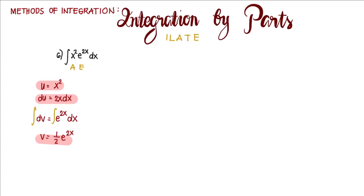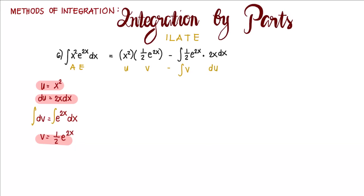We now use the formula to rewrite our given. Using u v minus the integral of v du, that's x squared times one half e to the power of 2x, minus the integral of one half e to the power of 2x times 2x dx. Simplifying, the 2 cancels, giving us one half x squared e to the power of 2x minus the integral of x e to the power of 2x dx.